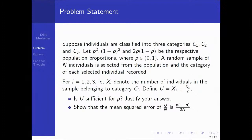Suppose individuals are classified into three categories C1, C2, C3, with respective population proportions P², (1-P)², and 2P(1-P), where P is the probability. A random sample of N individuals is selected, the category of each individual is recorded, and Xi denotes the number of individuals belonging to category Ci. The statistic U is defined as X1 plus X3 divided by 2. The question is: is U sufficient for P? We also need to find the mean square error of U by N.